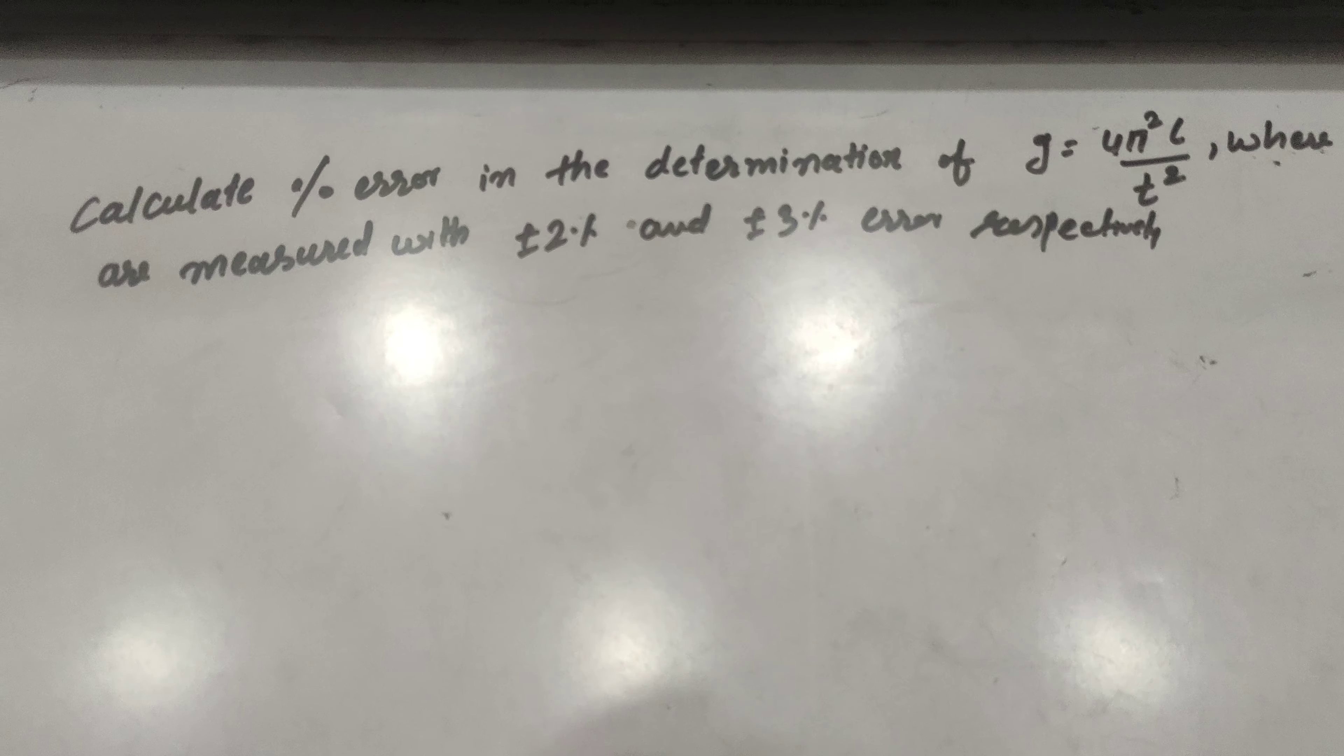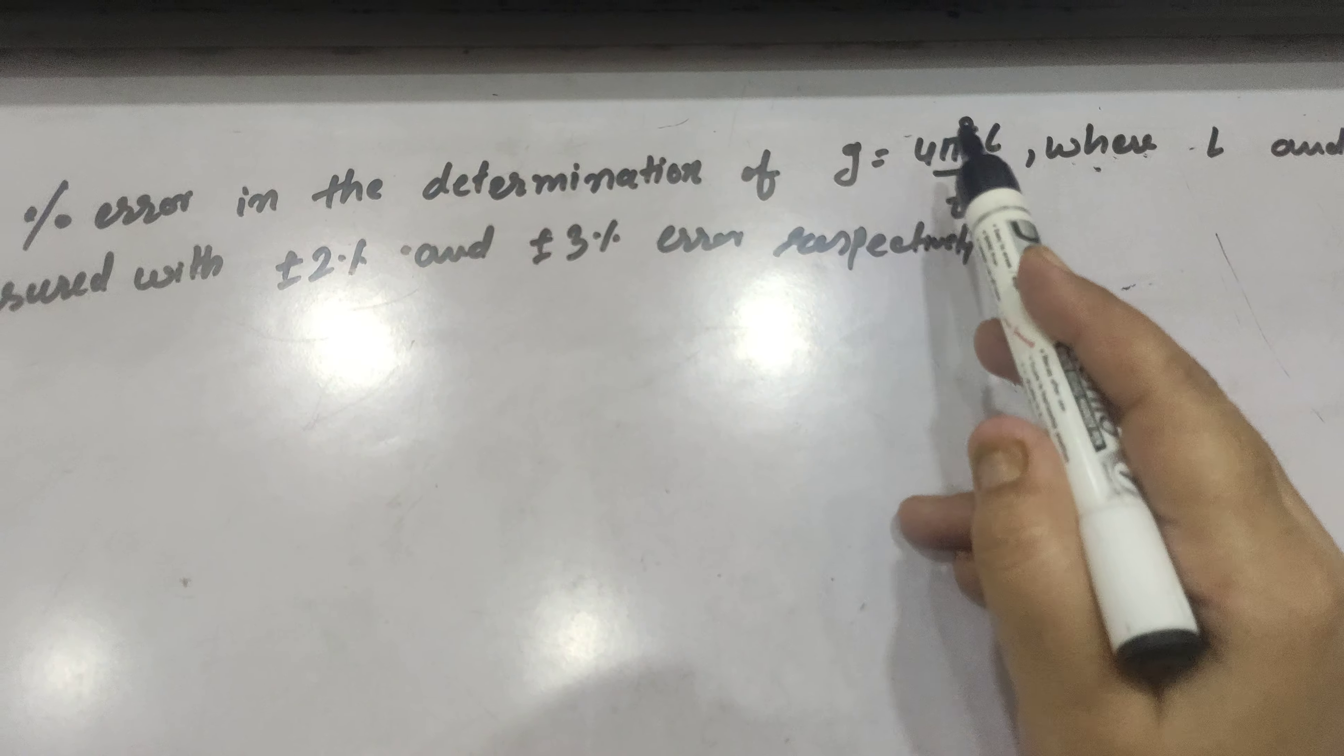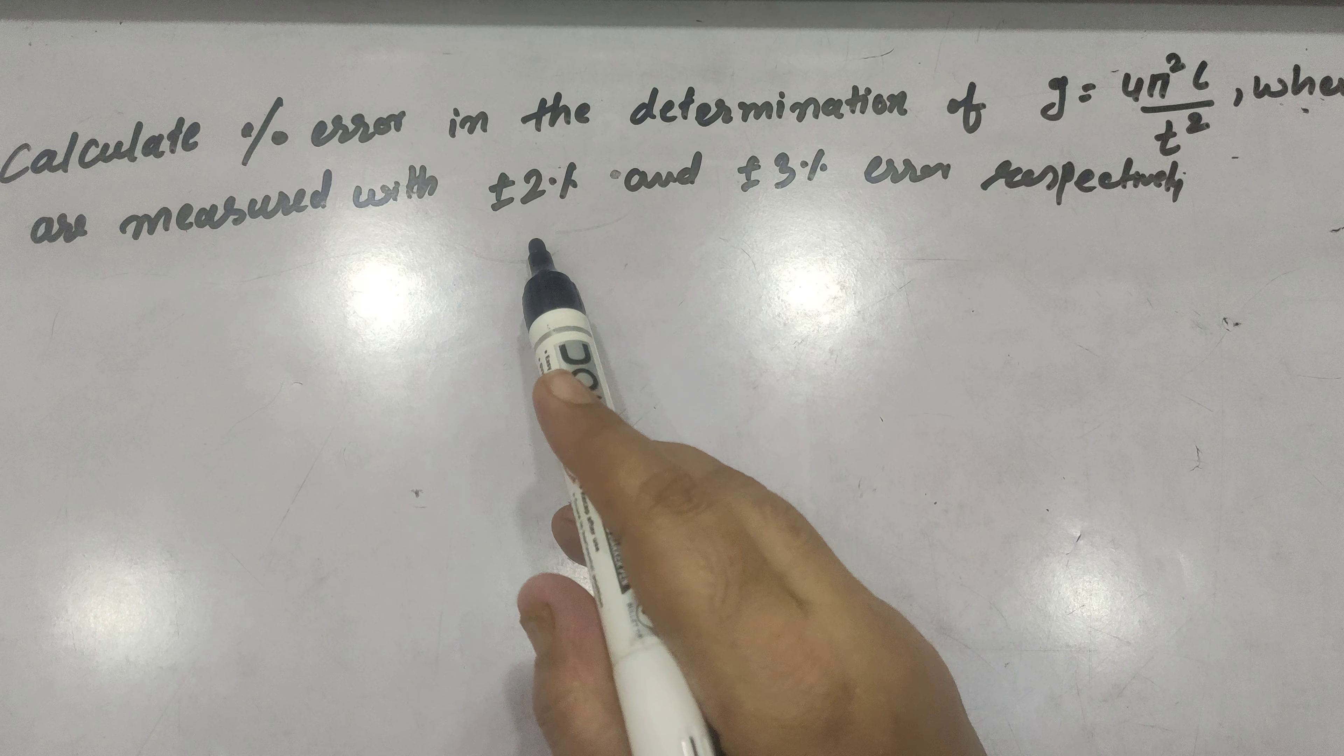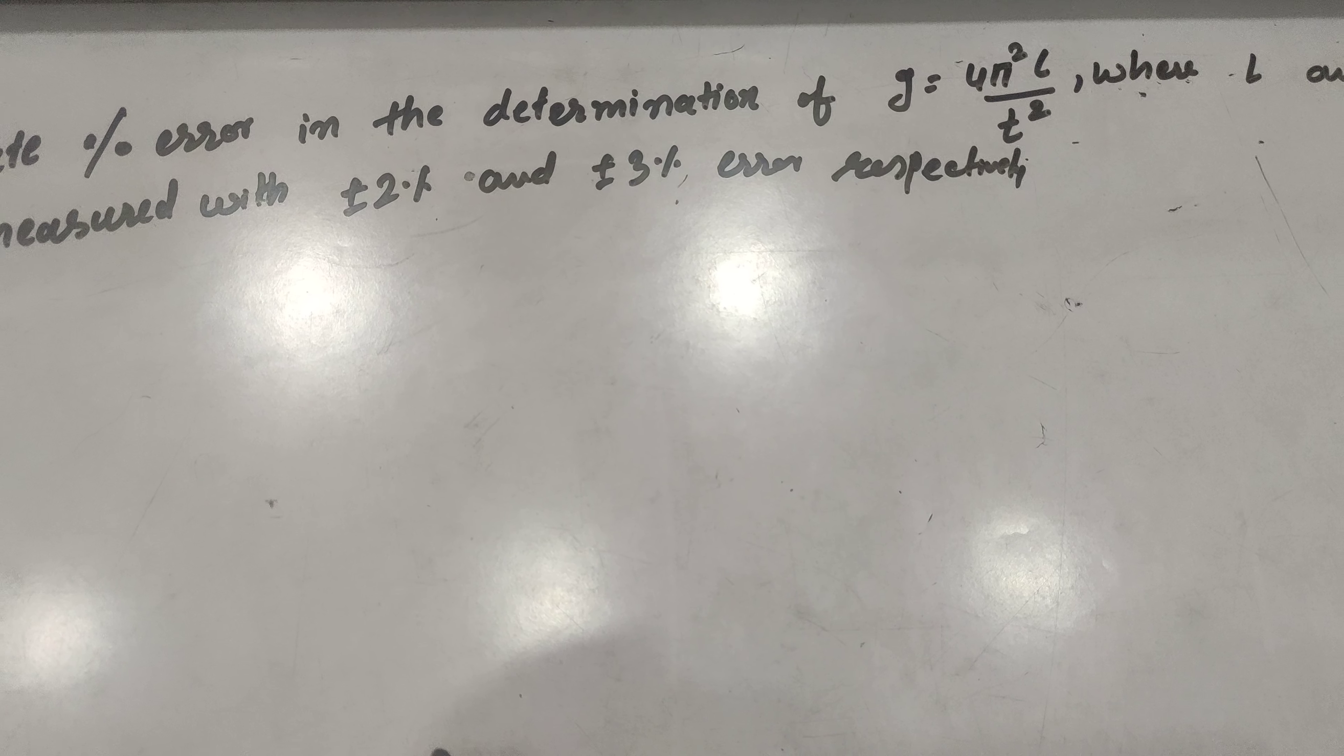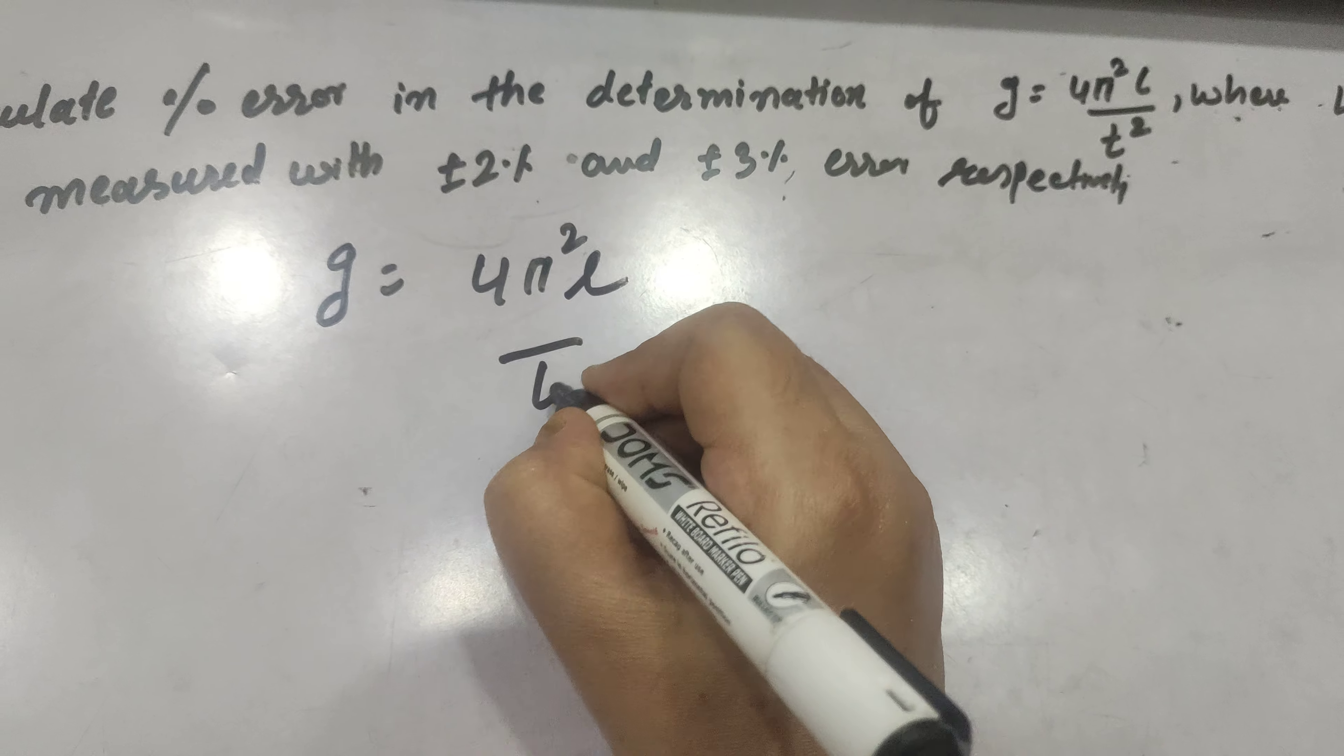Another important kind of numerical is calculate percentage error in determination of G is equal to 4 pi square L by T square, where L and T are measured with plus minus 2 percent and plus minus 3 percent error respectively. Here you can see that the physical quantity G is equal to 4 pi square L by T square.